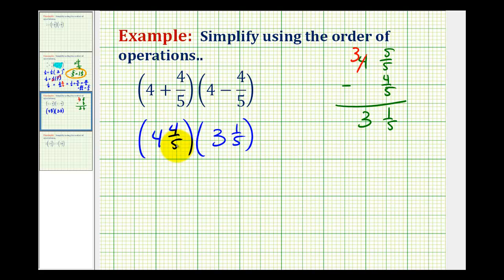So 4 and 4 fifths as an improper fraction would be 5 times 4, that's 20, plus 4, that's 24 fifths.